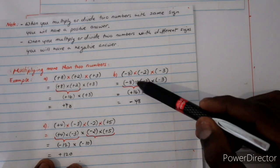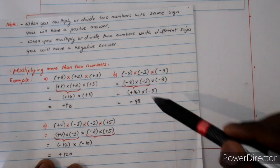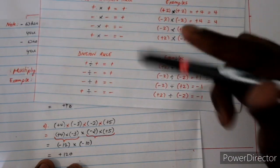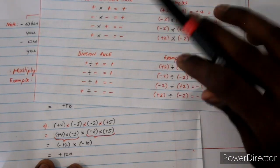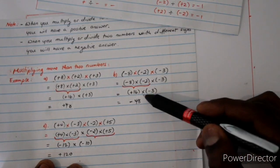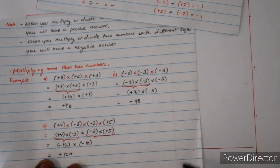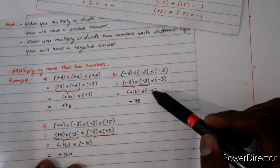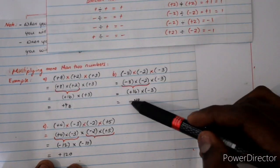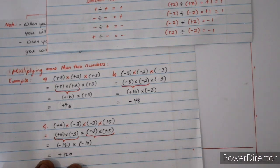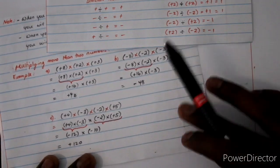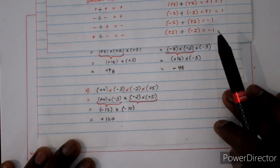Now what happens if we multiply three negative numbers together? Solve in pairs: negative 8 times negative 2 — negative times negative is positive, so we get positive 16. Then bring down the multiplication sign and negative 3. Positive times negative is negative, so 16 times 3 gives negative 48. The answer is not the same as the all-positive case.